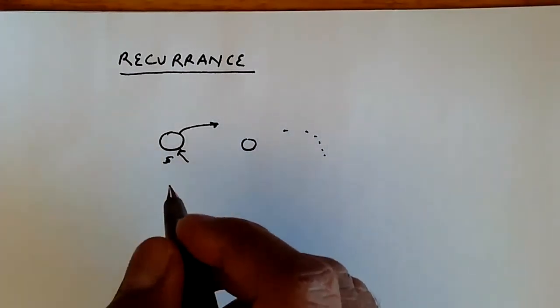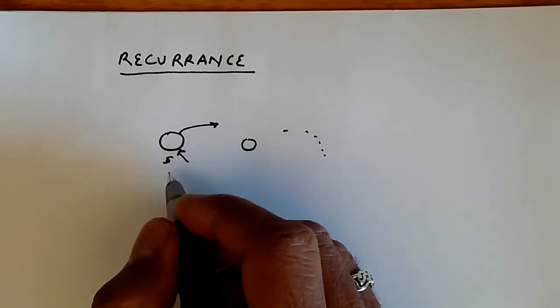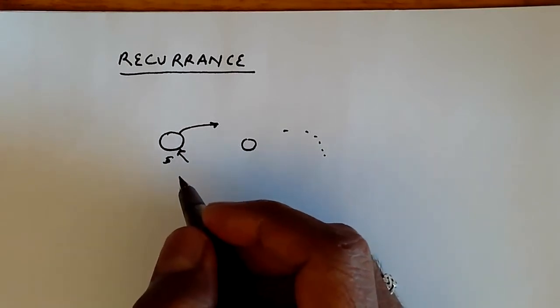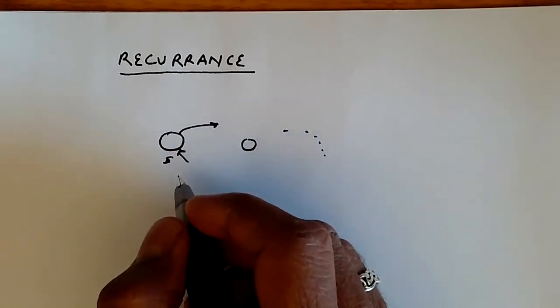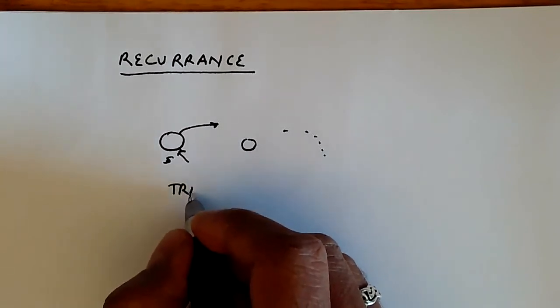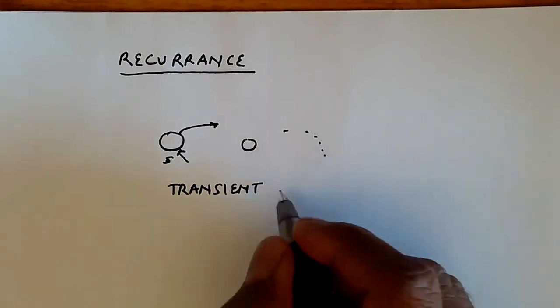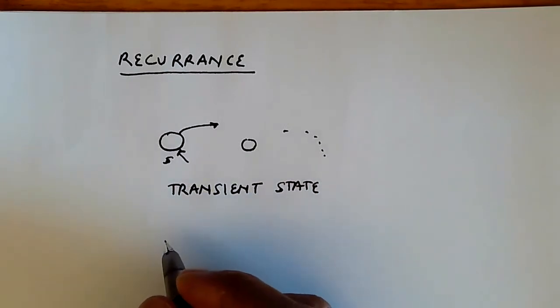So if the stochastic process is guaranteed to never re-enter the state S once it leaves it after a finite number of steps, then we say that this is a transient state. On the other hand, if the stochastic process has some probability of re-entering the state after a finite number of steps at some point in the future, then it's called a recurrent state.